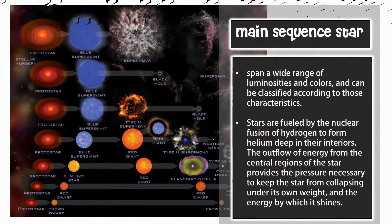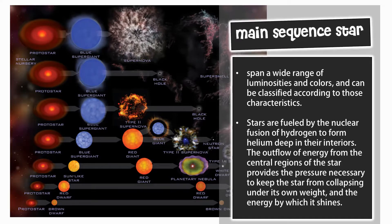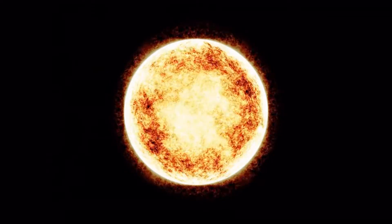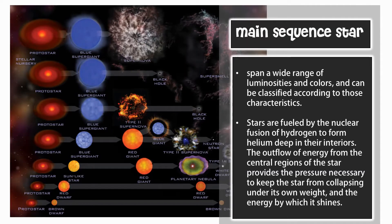In astronomy, the main sequence is a continuous and distinctive band of stars that appears on plots of stellar color versus brightness. Stars are fueled by the nuclear fusion of hydrogen to form helium deep in their interiors. The outflow of energy from the central regions of the star provides the pressure necessary to keep the star from collapsing under its own weight and the energy by which it shines.